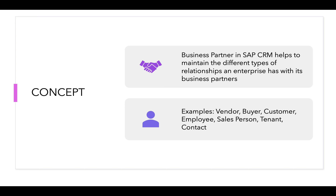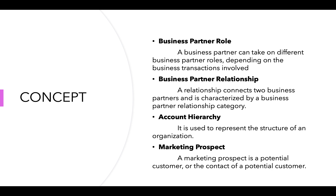A business partner helps us define the different types of business partners an enterprise or a company has. It helps to maintain the different types of relationships an enterprise has with its partners. Some examples are vendors, buyers, customers, employees, salespersons, tenants, contacts, and even suppliers.